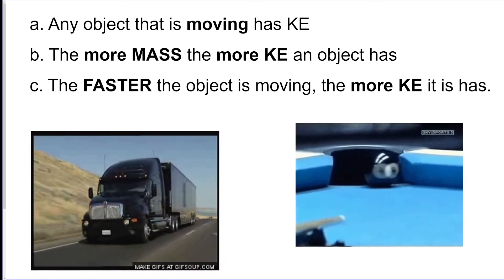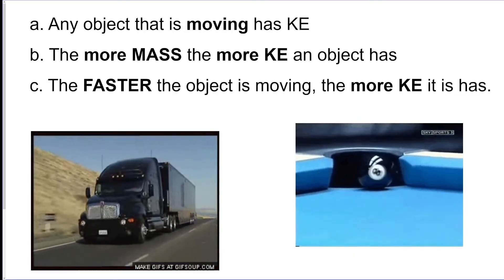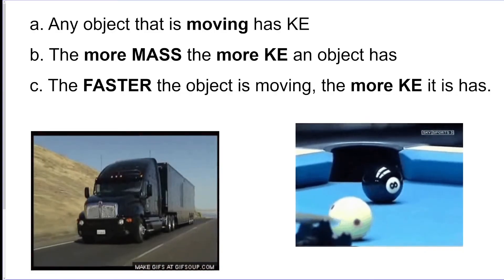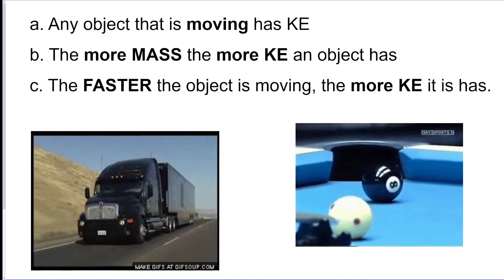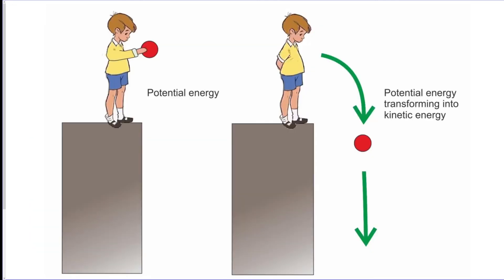The bigger the object is, the more energy it's going to have once it's moving. Also, the faster the object is moving, the more kinetic energy it has. Here's an example of potential turning into kinetic.